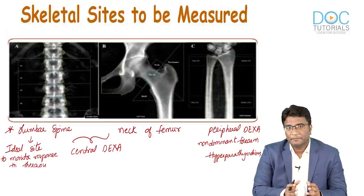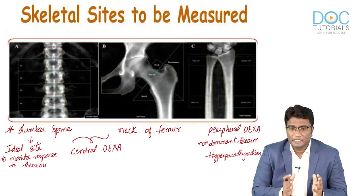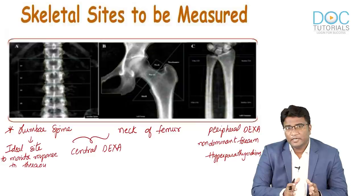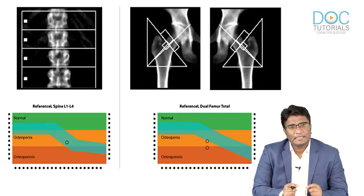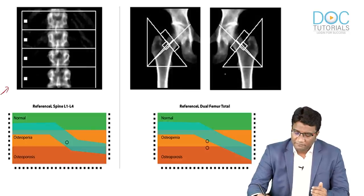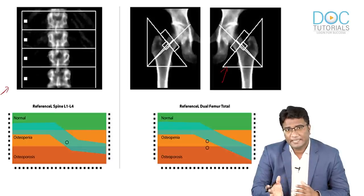To detect the risk of vertebral fractures, a lumbar spine DEXA is preferred. To detect the risk of fracture neck of femur, a total hip DEXA is preferred, where bone mineral density of both hips is taken and a mean value is obtained. If you are looking for the risk of Colles fracture, we take peripheral DEXA from the non-dominant forearm at the Colles region.